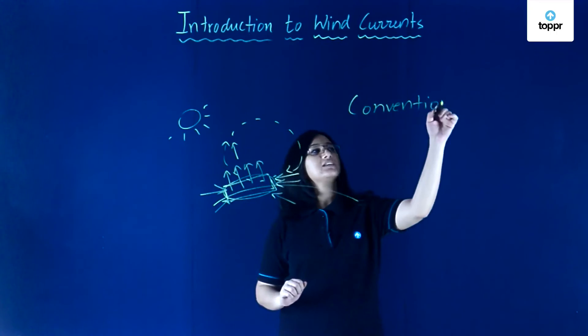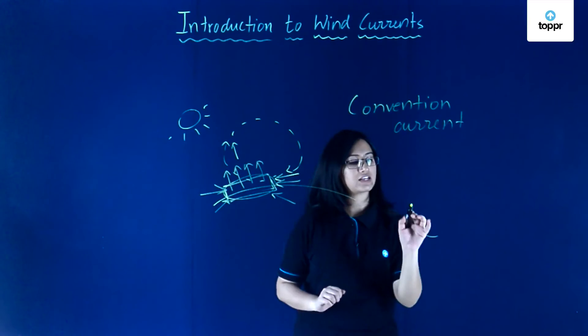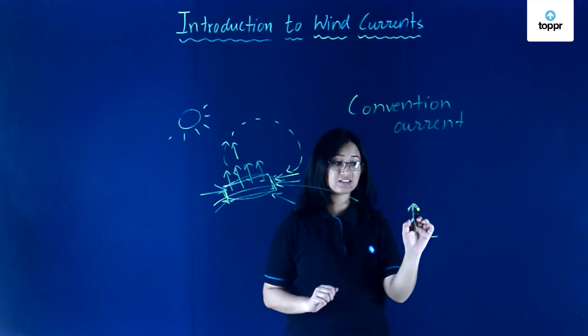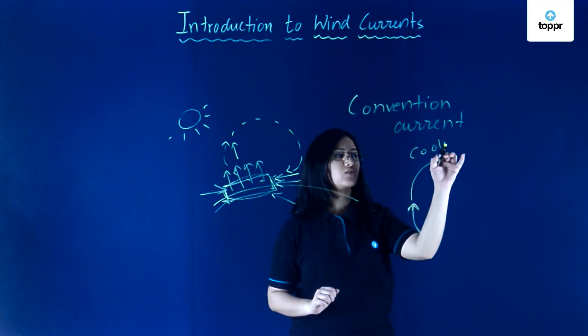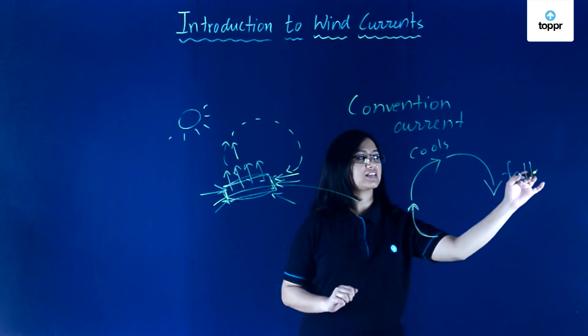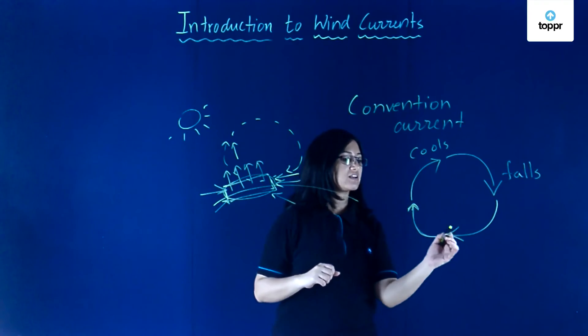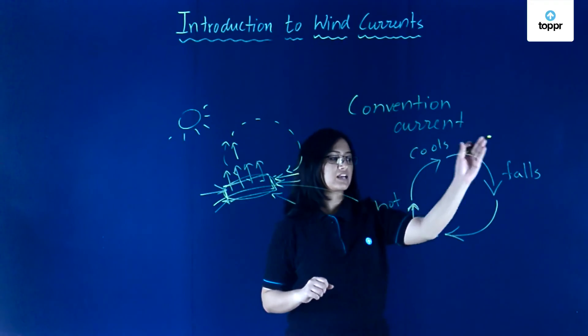So what is a convection current of air? Warm air gets heated up, or air gets heated up and it rises. It rises and as it rises it cools down, and then this cool air falls again because it is heavier or it has contracted, and it replaces the warm air that has risen up which has cooled down again.